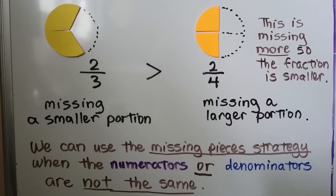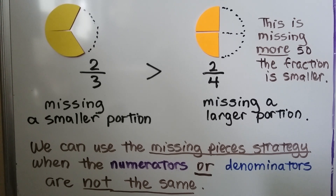We can use the Missing Pieces strategy when the numerators or denominators are not the same.